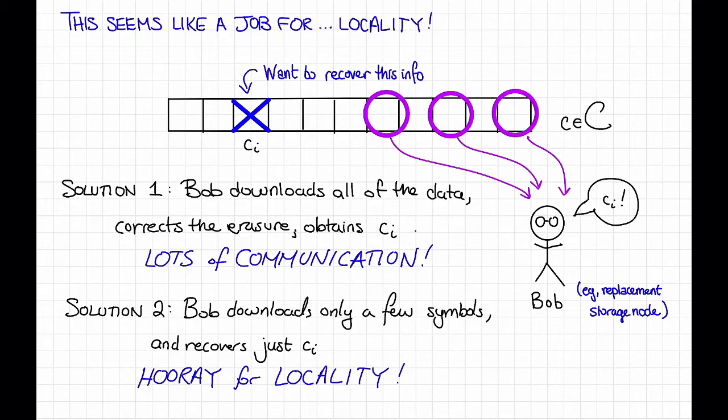However, in this model, first we have erasures instead of errors, and second, we also typically have a constant number of erasures rather than a constant fraction of erasures. That is, in real data centers, it's common, say, for example, one node to be down at a time or something like that. You don't expect 10% of your nodes to fail at the same time.